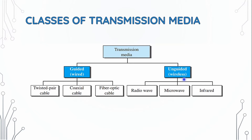Unguided wireless media are three: radio wave, microwave, and infrared. In this video, we will talk about guided media — twisted pair cable, coaxial cable, and fiber optic cable.